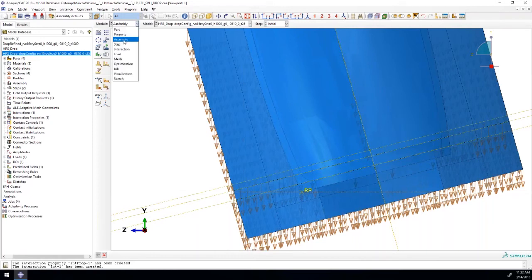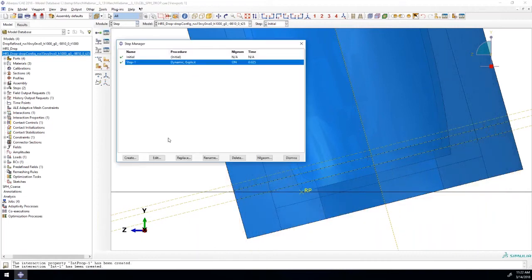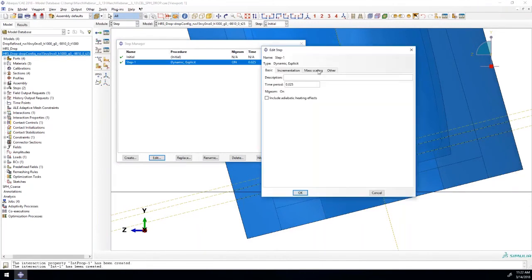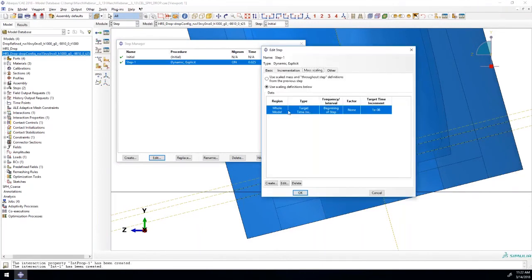Working our way down the tree here back to that step module, which we skipped over before, we can see that we've now got an explicit dynamic step. If we take a look into that step, we've got the time period assigned as well as that target time increment for our mass scaling that we entered into the plugin there.